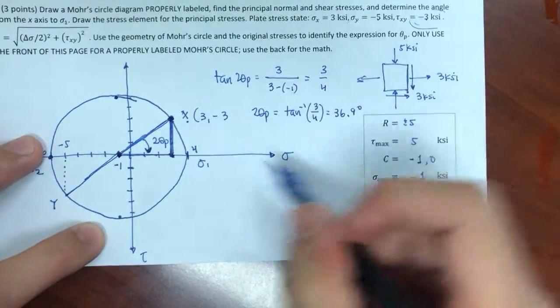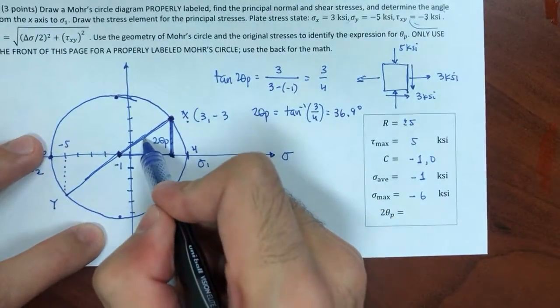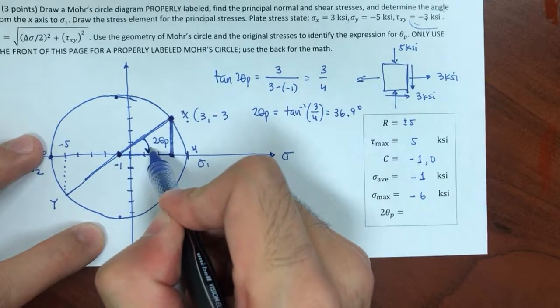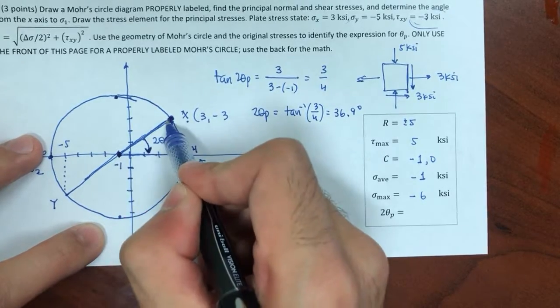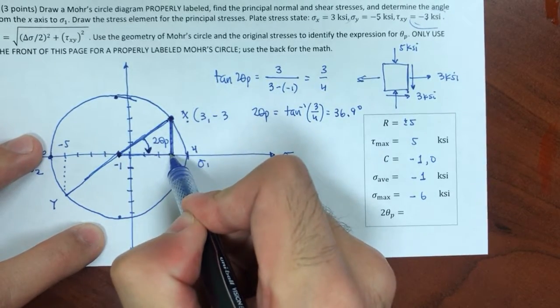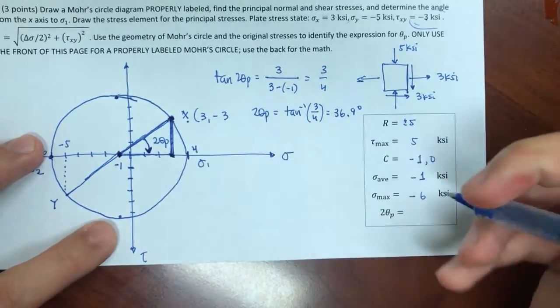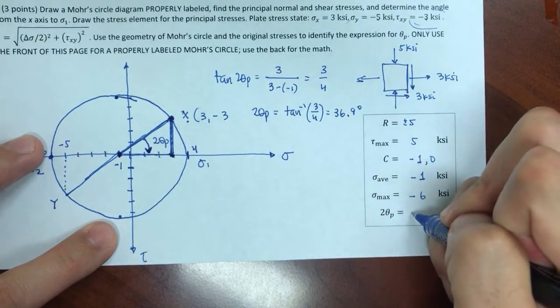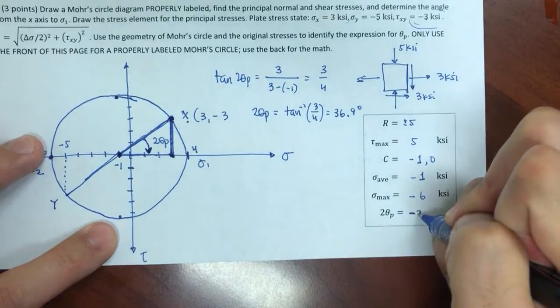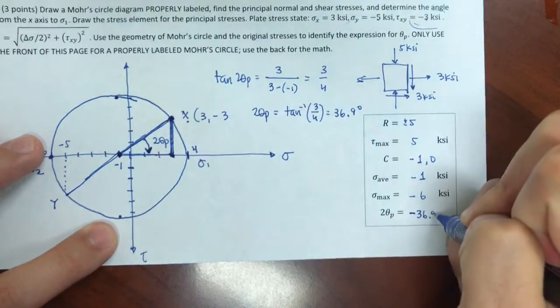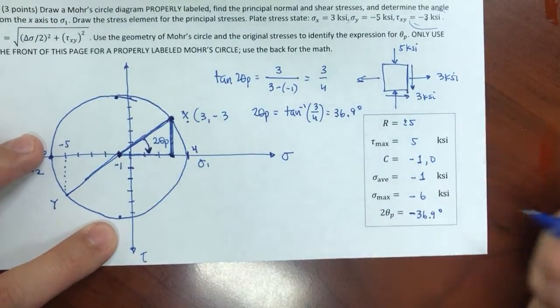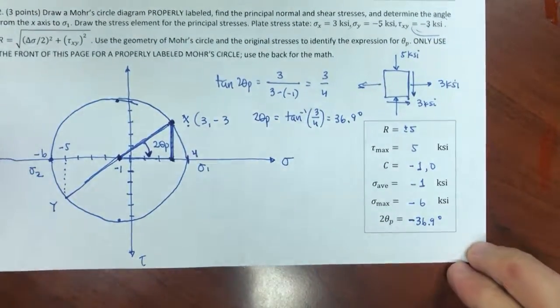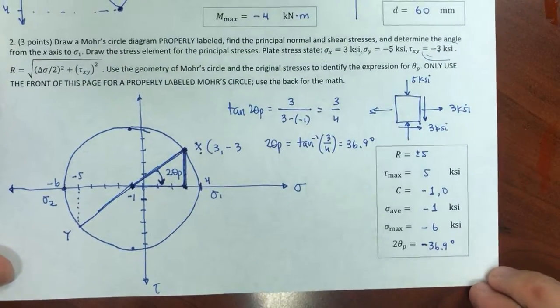The rotation on the Mohr's circle goes clockwise from the original state to the principal stress point, so the angle is negative: θ_p = −36.9/2... actually 2θ_p = −36.9 degrees, so θ_p = −18.45 degrees. That's the answer.